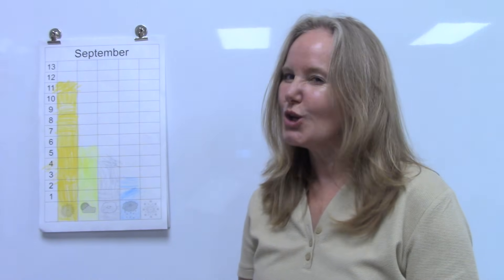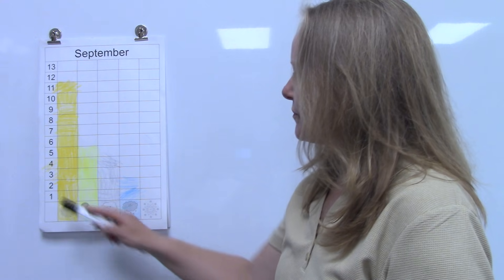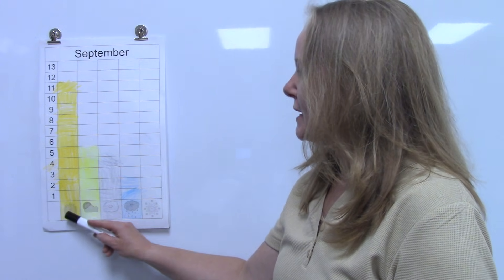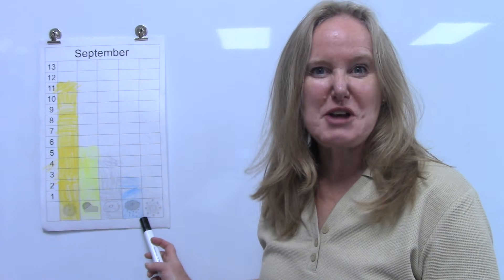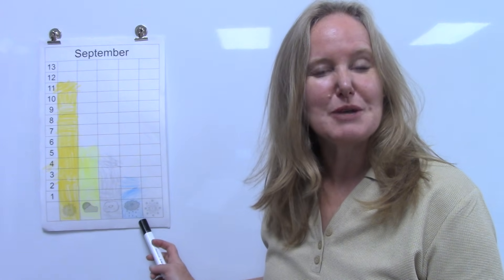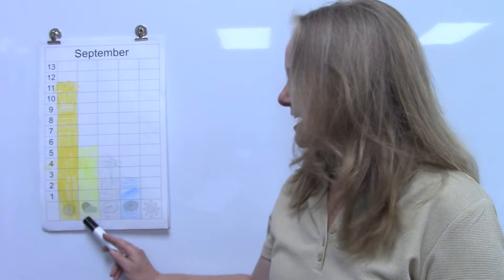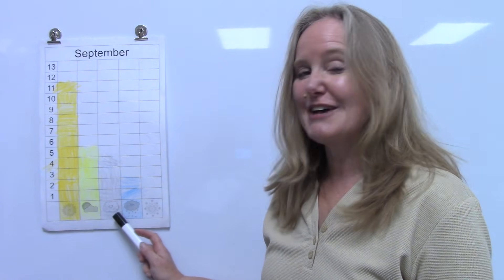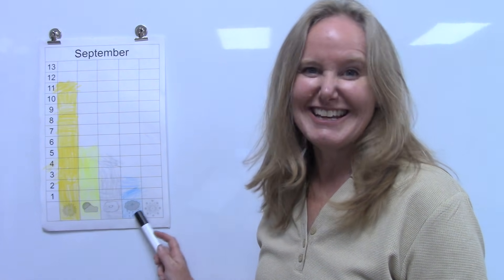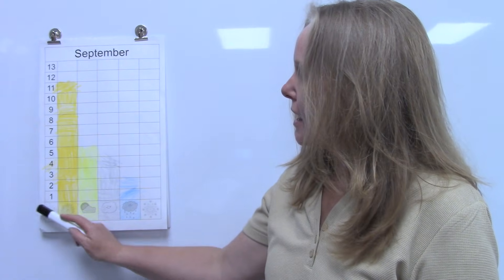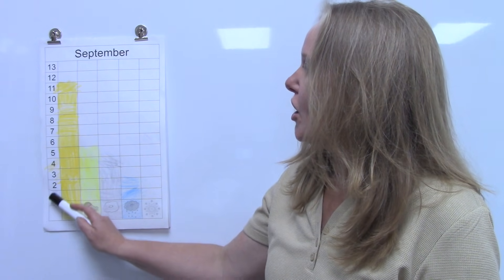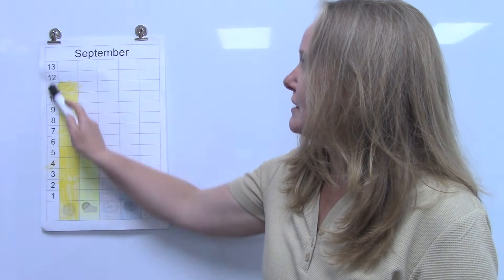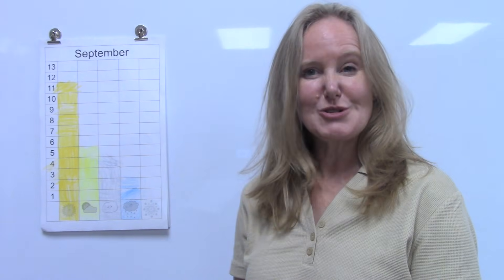Let's take a closer look at this graph. We can see that on the bottom of the graph we have the different types of weather: sunny, partially cloudy, cloudy, rainy, and snowy. And then on the left hand side there are numbers that go all the way up to 13.